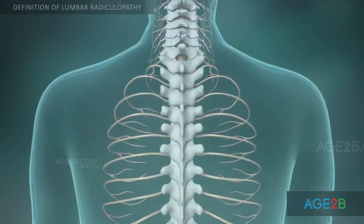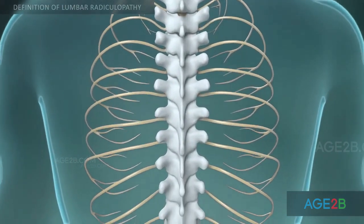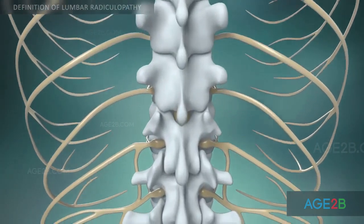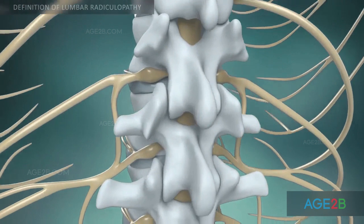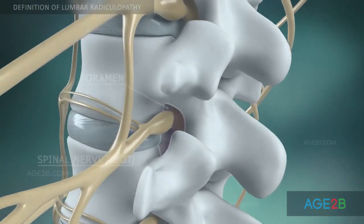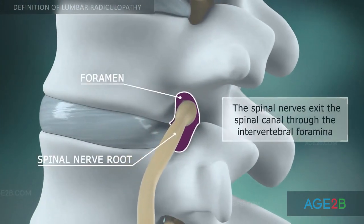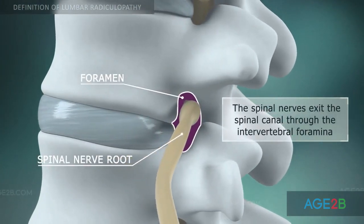The spinal nerves branch off your spinal cord in pairs and travel through small openings between your vertebrae called intervertebral foramina.